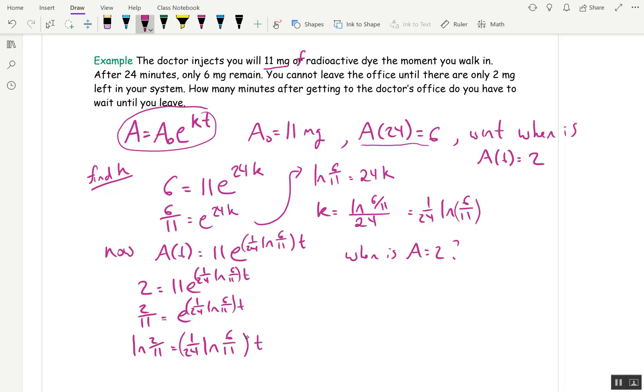Ln of 2 over 11 is 1 over 24 ln of 6 over 11, all times t. And finally, we solve for t. Go up over here, t equals. So we're going to put the 24 on top, multiply both sides by 24, and then ln of 2 over 11 is going to sit upstairs, and then we'll divide by ln of 6 over 11. Okay.